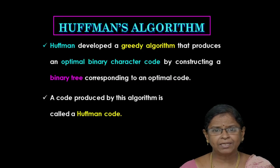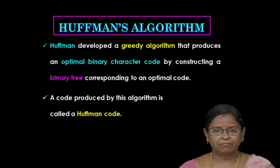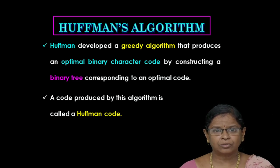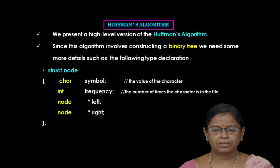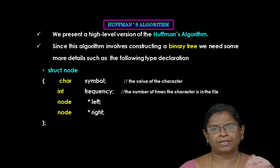Huffman developed a greedy based algorithm which produces an optimal binary tree, and when we are traversing the binary tree, we can obtain the binary character code, named as Huffman code. Now we are going to discuss about the high level version of the Huffman's algorithm.